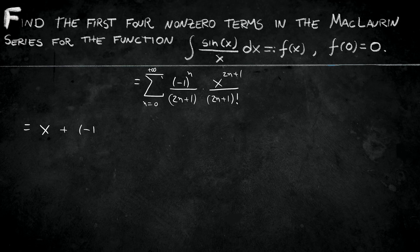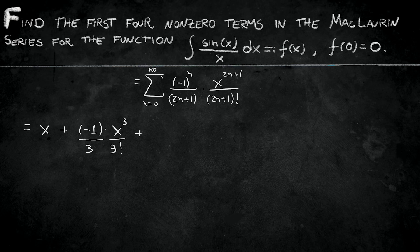Let's apply 1. When I apply 1 here, I have minus 1 to the power 1, x to the power 2 plus 1, that's 3, over 2 plus 1, that's 3, times 2 plus 1 factorial, that's 3 factorial. And then my second term is minus 1 x cubed over 3 times 3 factorial.